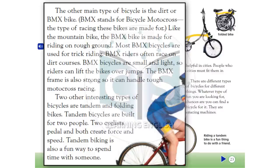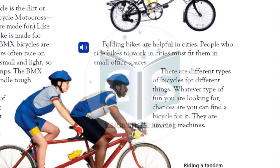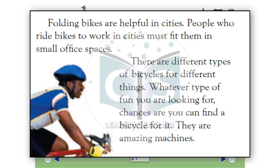Two other interesting types of bicycles are tandem and folding bikes. Tandem bicycles are built for two people. Two cyclists pedal and both create force and speed. Tandem biking is also a fun way to spend time with someone. Folding bikes are helpful in cities. People who ride bikes to work in cities must fit them in small office spaces. There are different types of bicycles for different things. Whatever type of fun you are looking for, chances are you can find a bicycle for it. They are amazing machines.